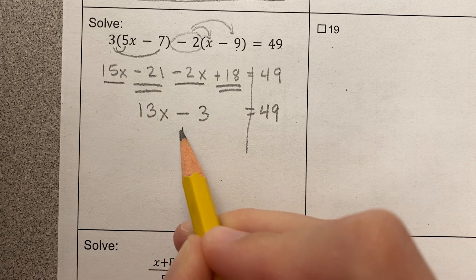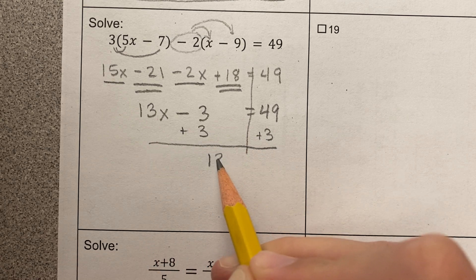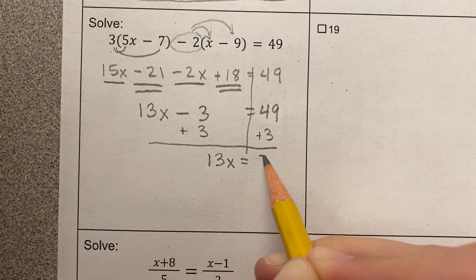Now I'm going to get x by itself. I'm going to add 3 to both sides. I always deal with that addition and subtraction first. I end up with 13x equals 52.